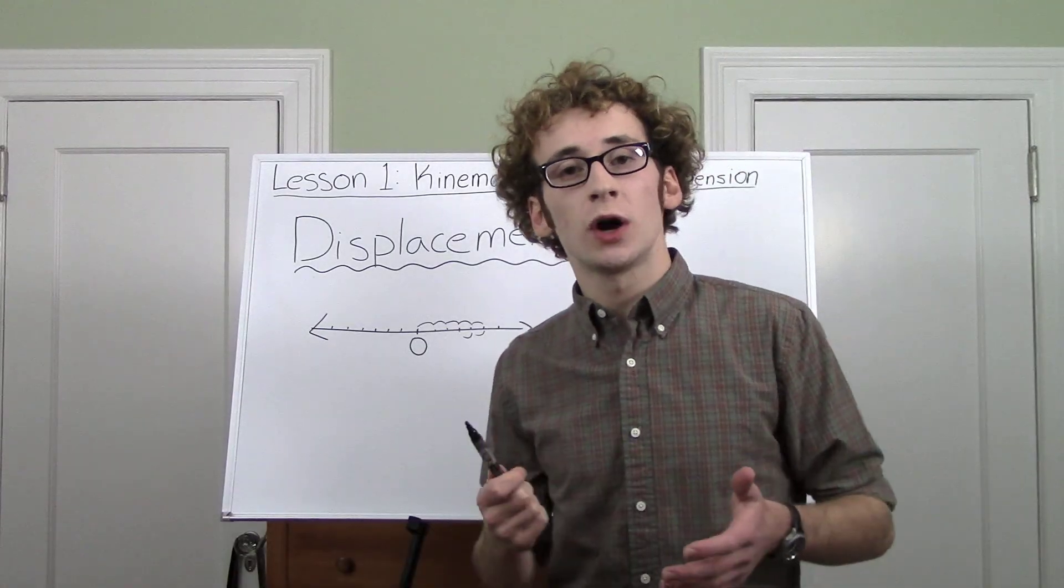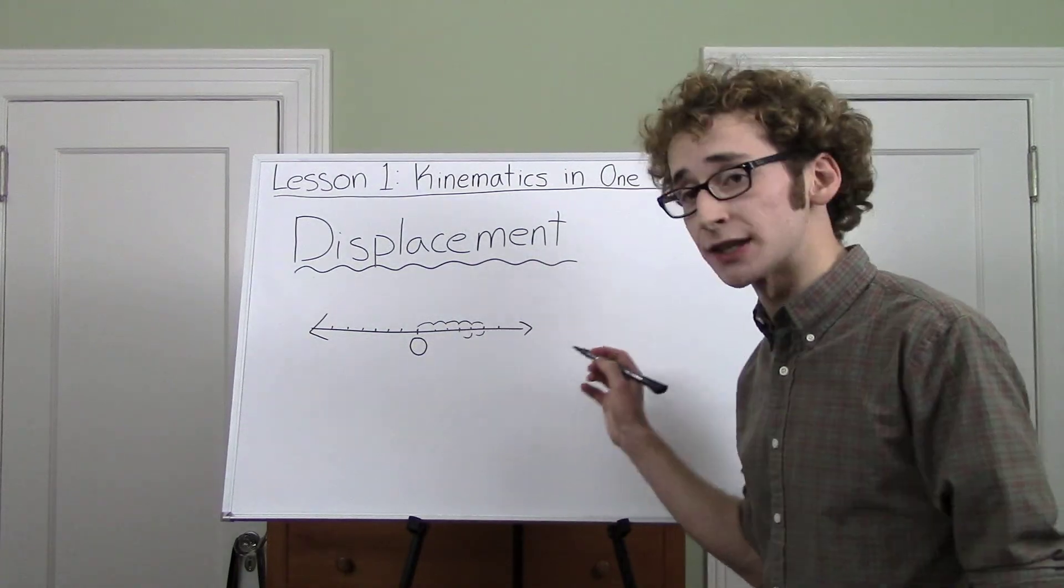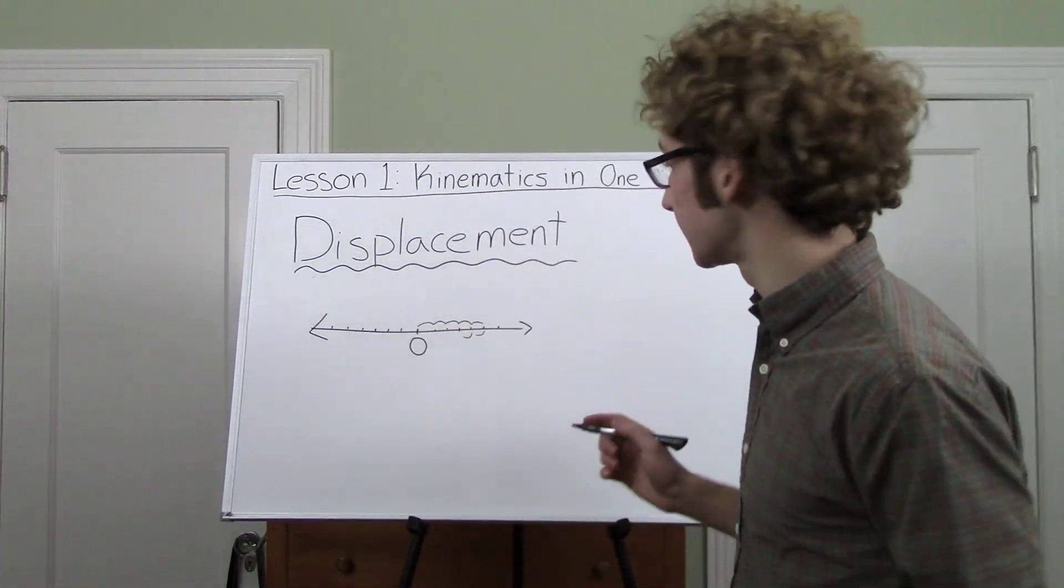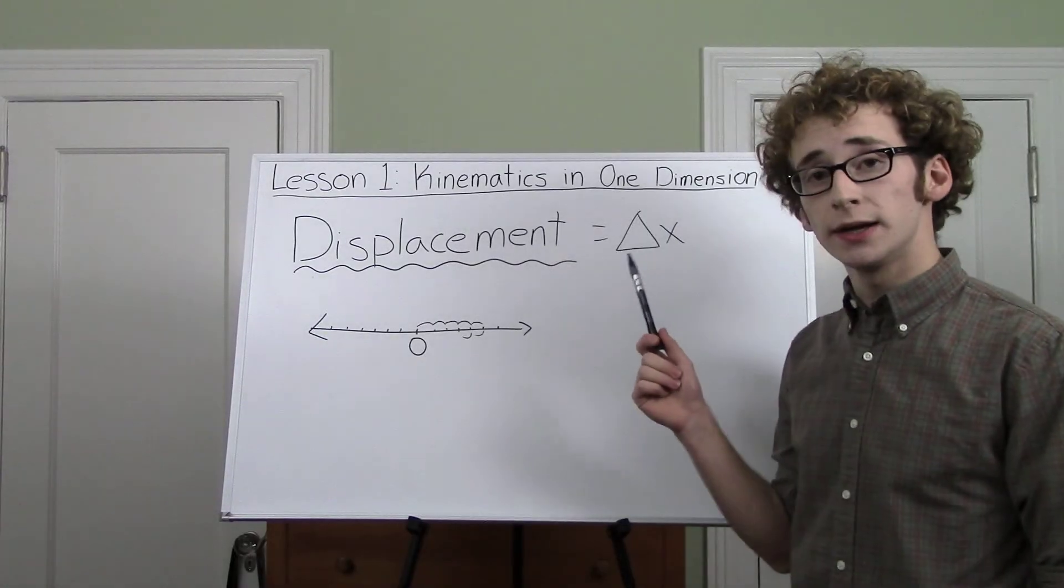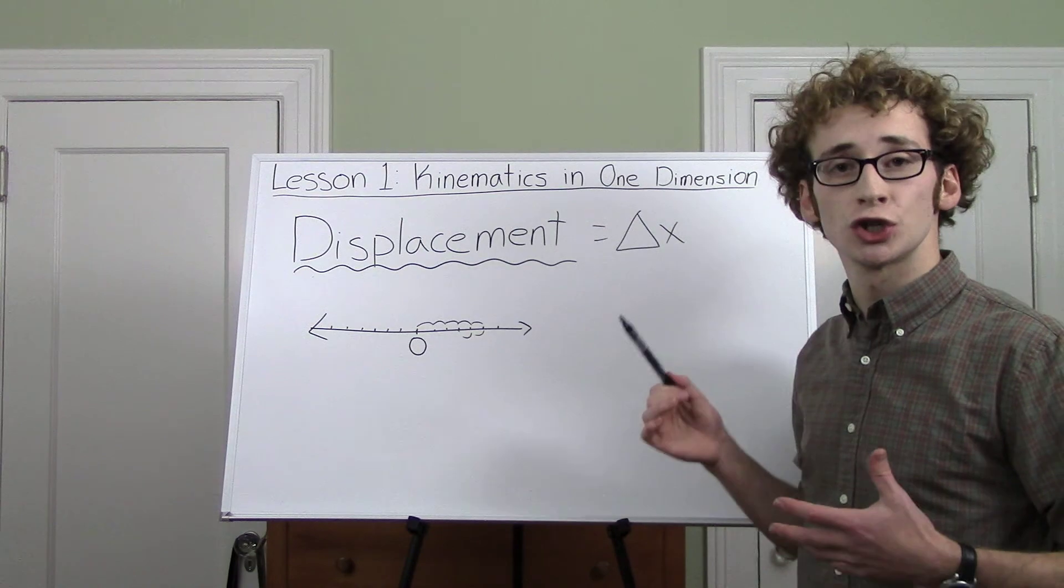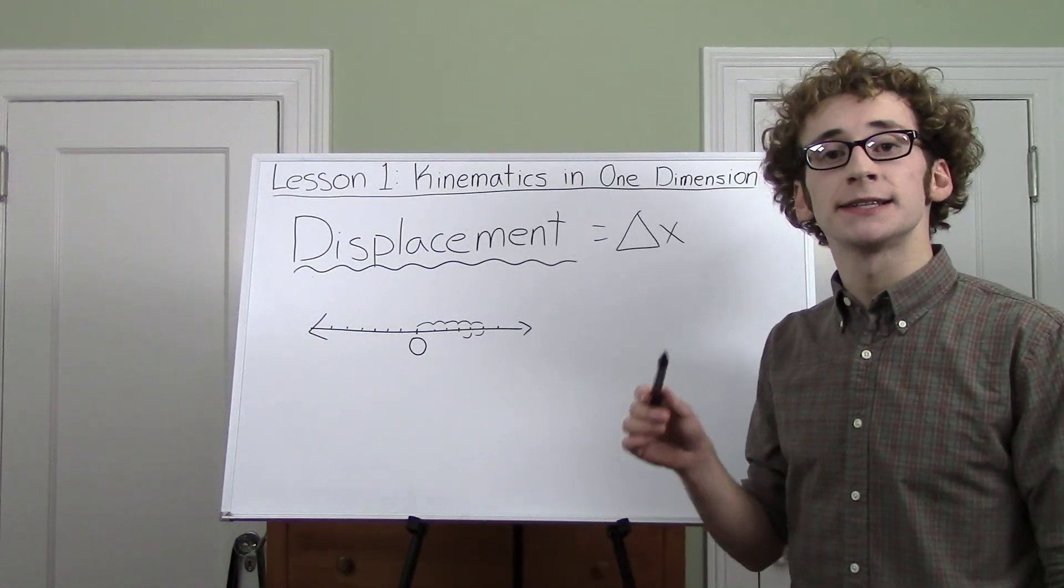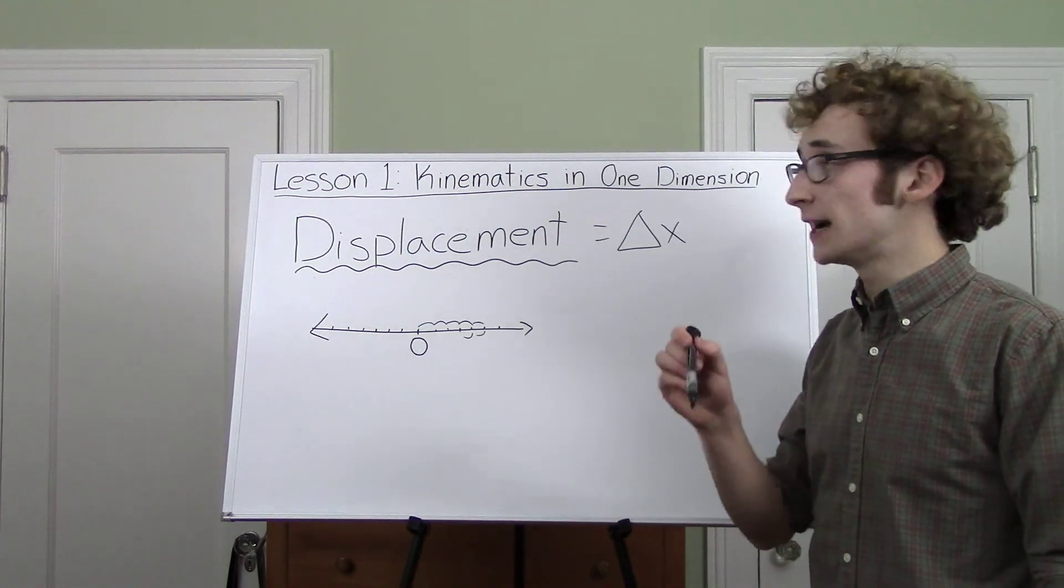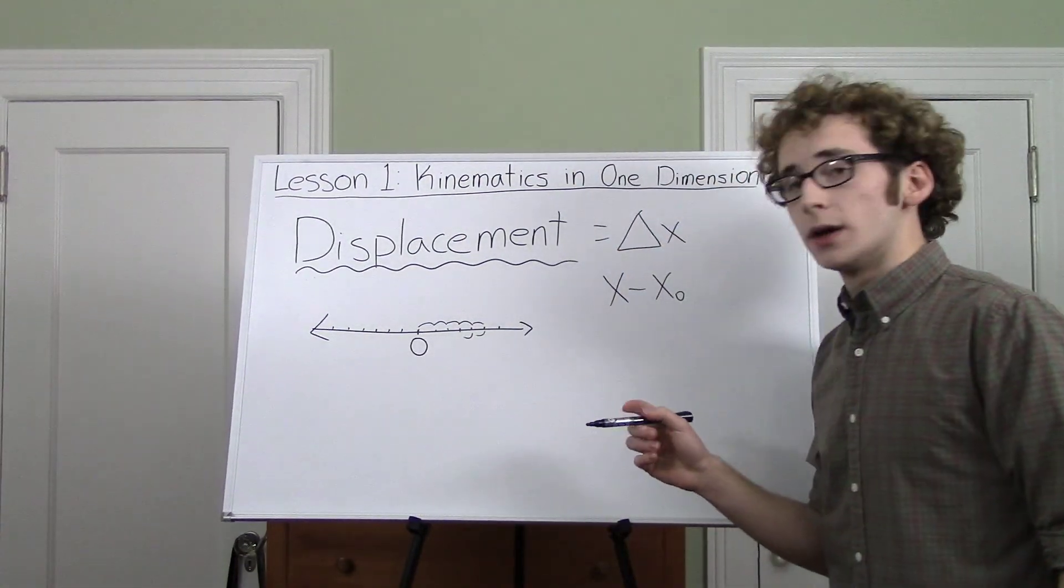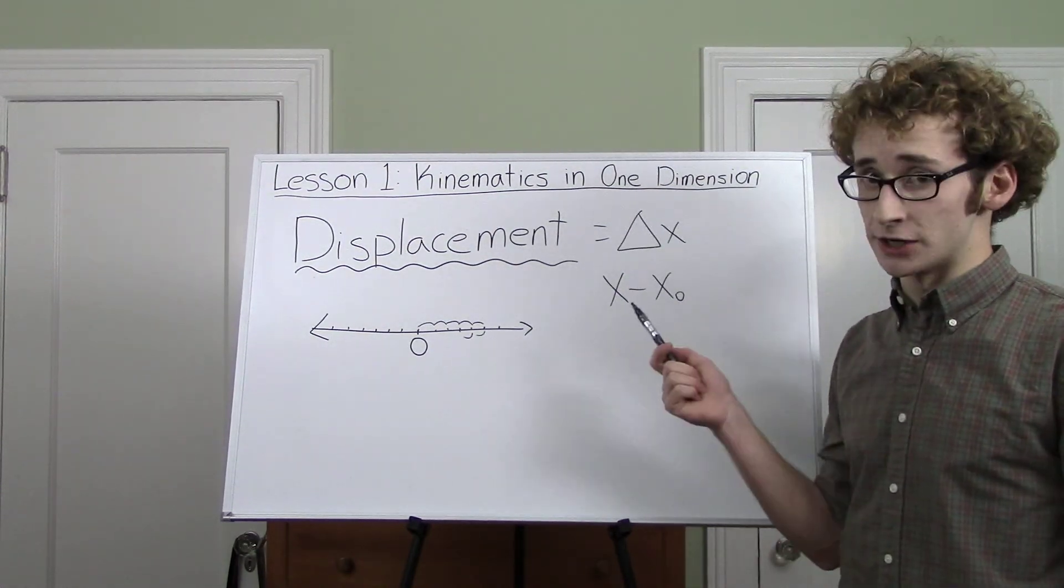For this reason, we often describe displacement as your change in x, your change in your x coordinate. If you're moving up and down, it'll be change in y, and that's written as this. This little triangle is a Greek letter delta, and delta just means change in. So delta x means change in x, and that is equal to final position minus initial position.